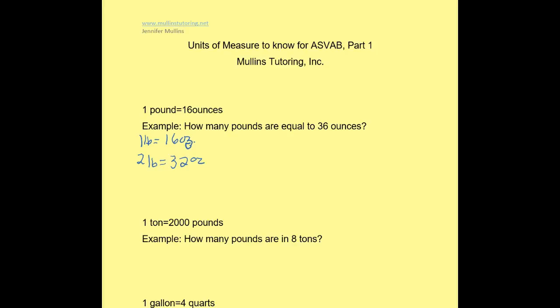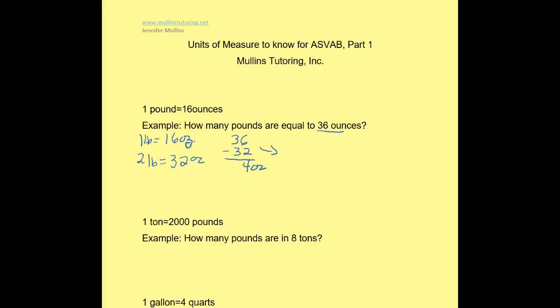I know that 2 pounds is not enough because what I'm looking for is 36 ounces. So what I'm going to do is take my given of 36 and subtract my 2 pounds, which is equivalent to 32 ounces. So when I subtract this, I have 4 ounces. This just tells me that 36 ounces is equal to 2 pounds and 4 ounces.